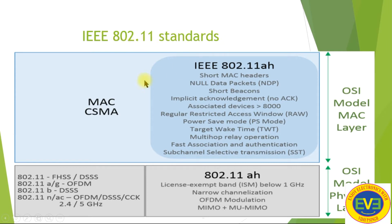IEEE 802.11 standards include MAC CSMA, short MAC headers, null data packets, short beacons, implicit acknowledgement, no acknowledgement, and associated devices greater than 8000. These are the different parameters of the protocol. In the OSI model, there is a MAC layer and a physical layer. The physical layer of 802.11 uses a license-exempt band below one GHz, narrow band, OFDM modulation, MIMO, and MU-MIMO.